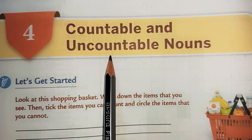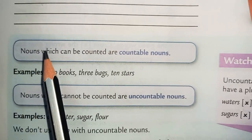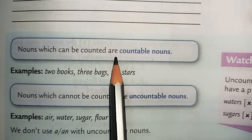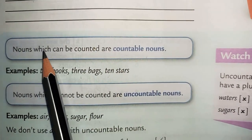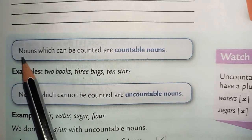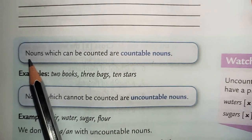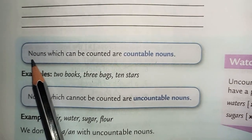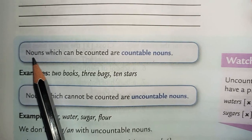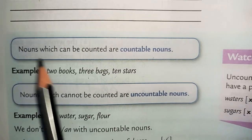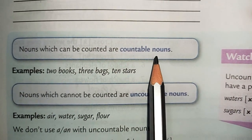Let us read the definition to understand the concept. Nouns which can be counted are countable nouns. Nouns are the name of a person, place, animal, or thing. So those nouns which we can count are called countable nouns.